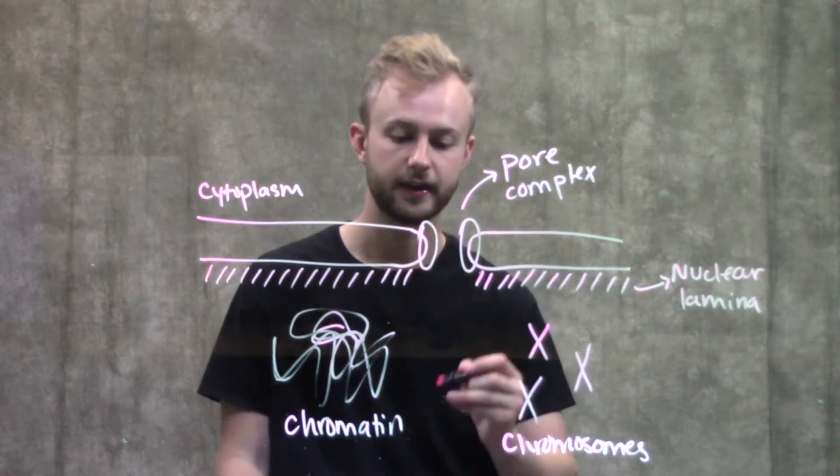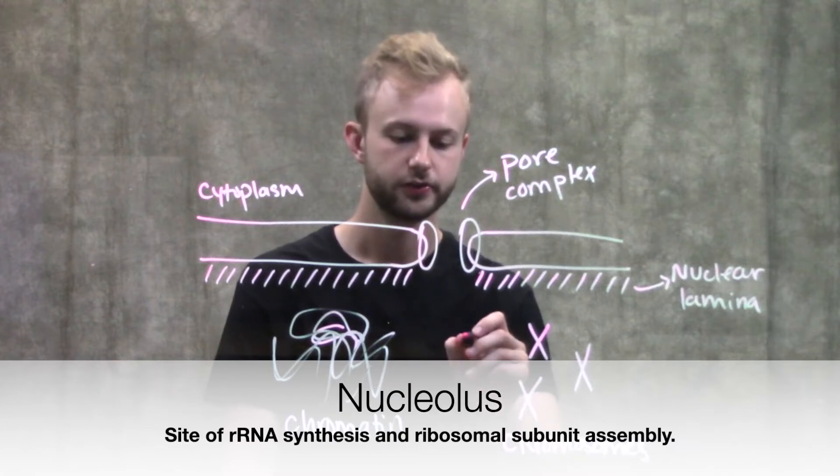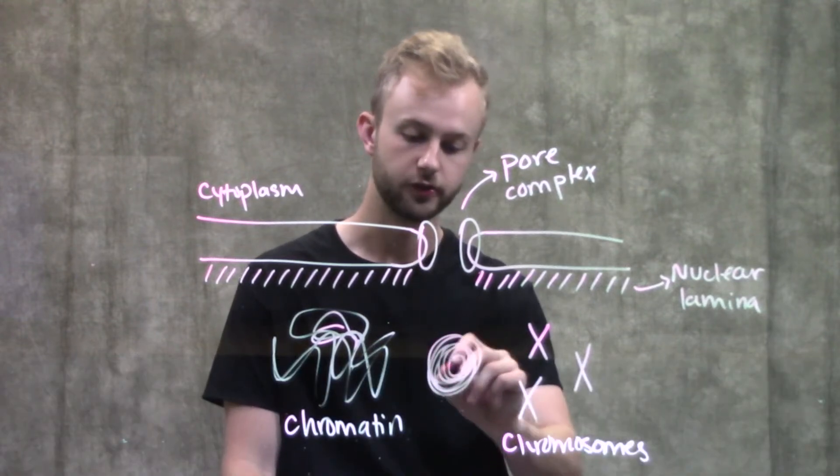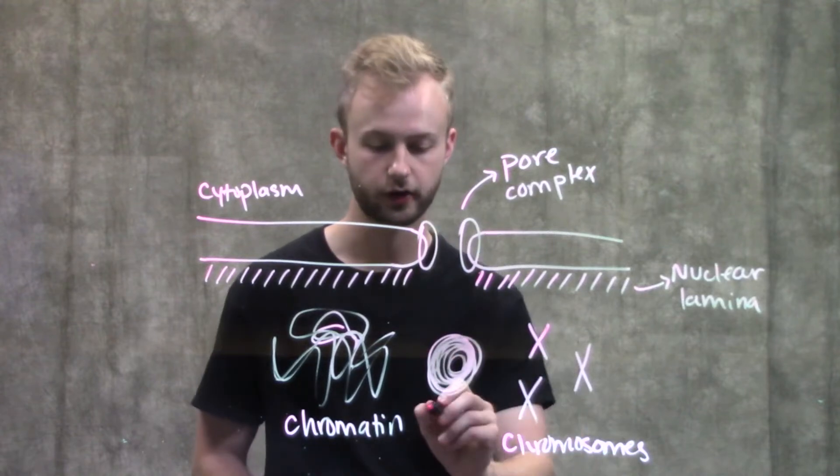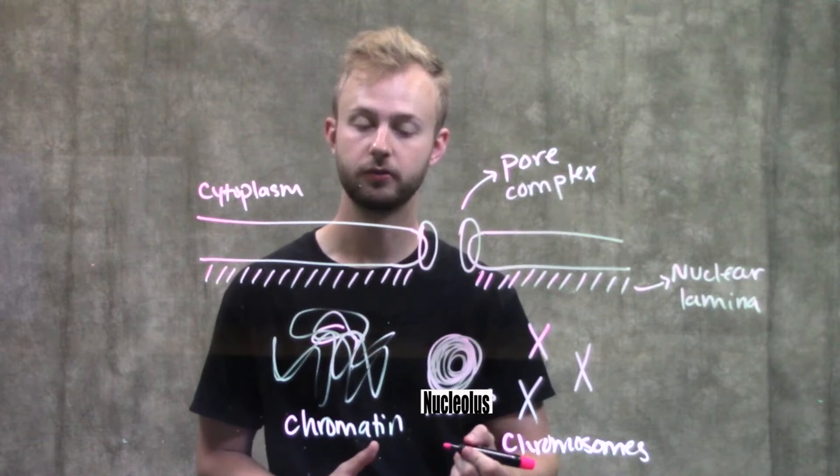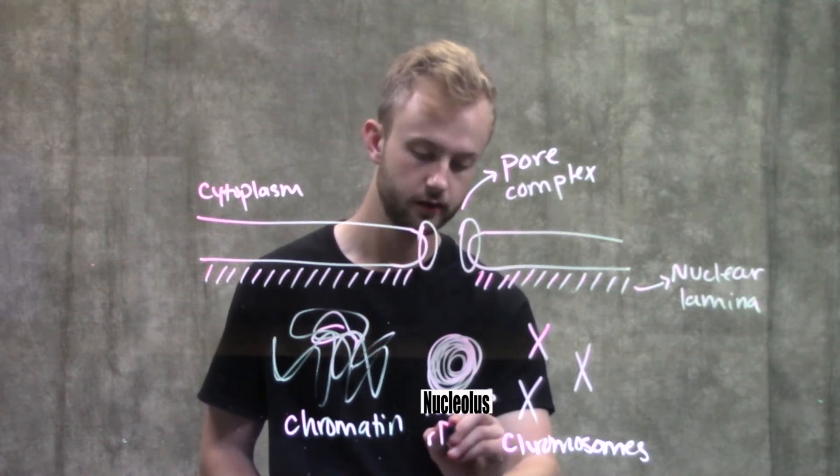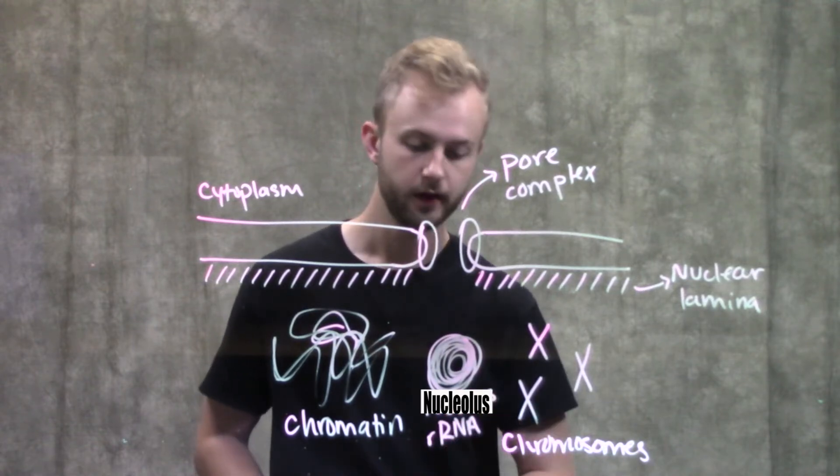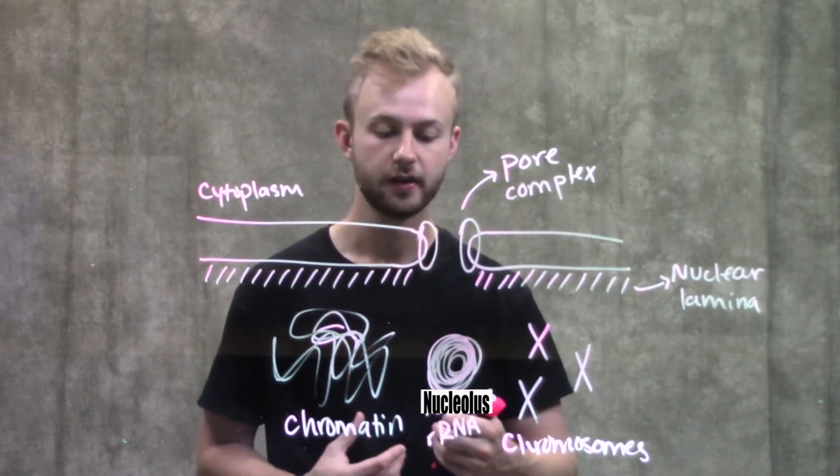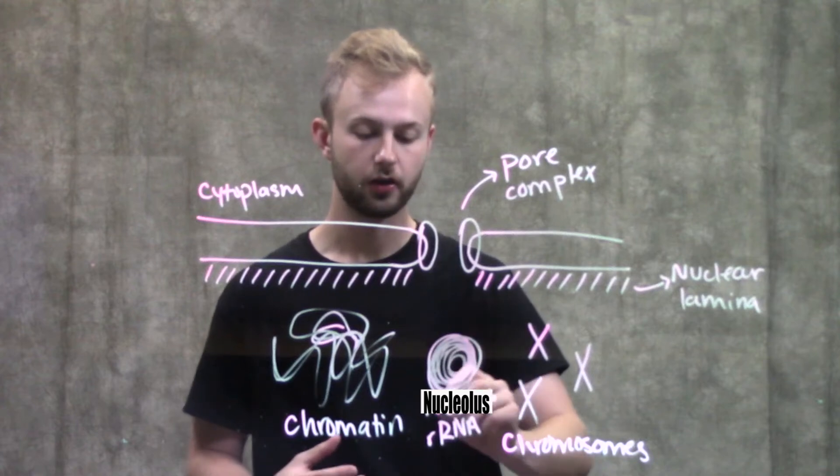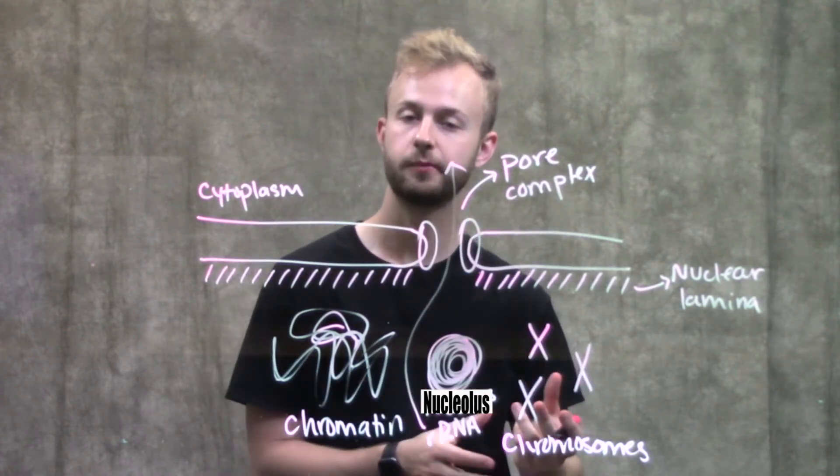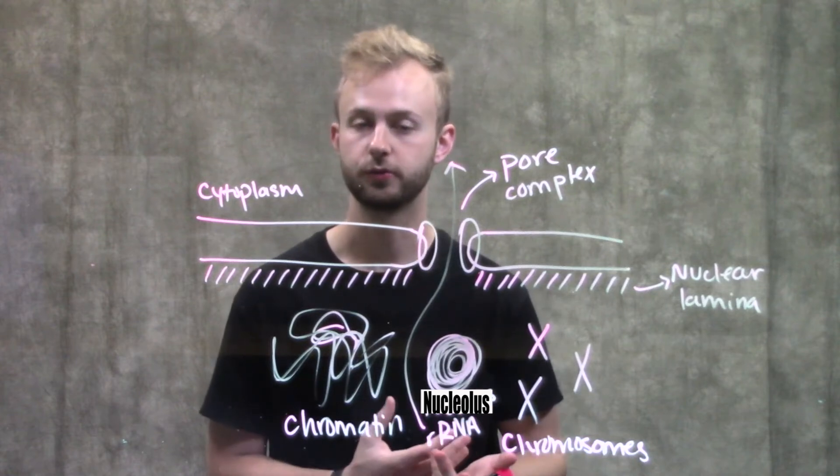The last thing we're going to look at is something called the nucleolus. The nucleolus is like a dark spot inside our nucleus. In this area is where we make our ribosomal RNA or rRNA. That rRNA is what makes up our ribosomes with some other proteins. When we make that rRNA, we have to transport it out through the pore complexes into the cytoplasm so it can actually be useful to our cells.